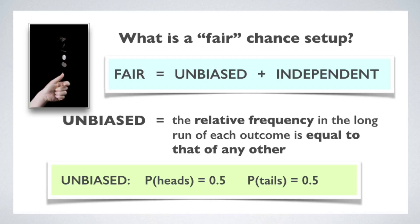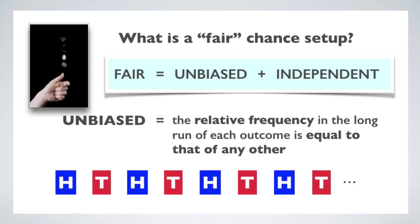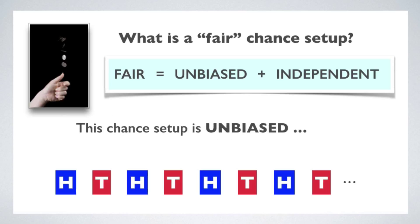Now this is not the same as saying that the outcomes are independent. Look at the sequence of coin tosses: heads, tails, heads, tails, heads, tails. Let's assume it goes on like this, always alternating heads and tails. Does this describe an unbiased set of outcomes? Yes it does. 50% of the time the coin lands heads, and 50% of the time it lands tails. So the long run behavior doesn't favor one outcome over the other. This makes it unbiased.